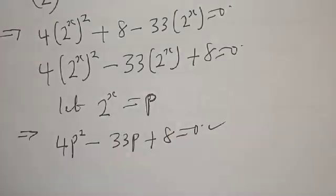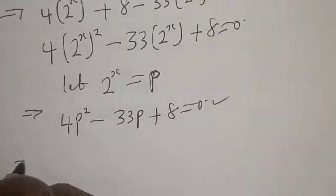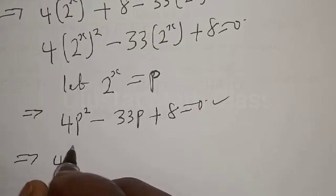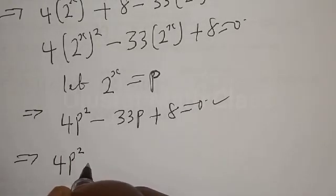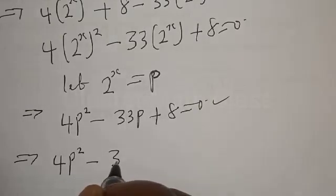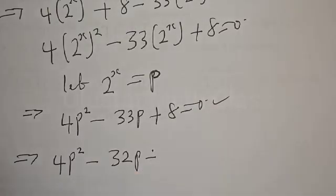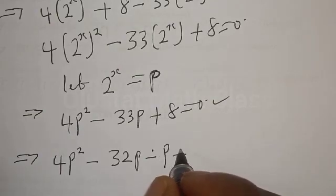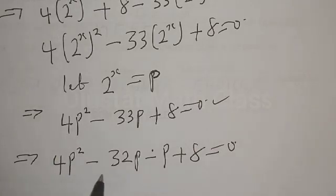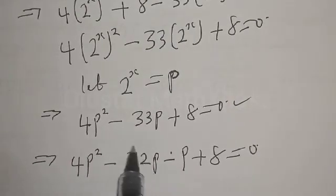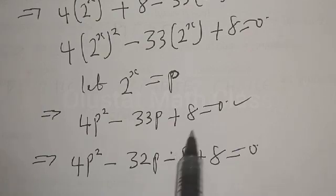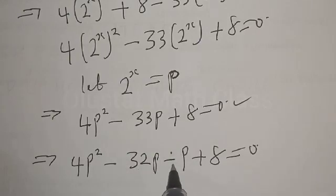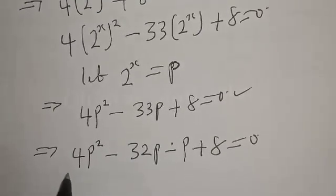This is a quadratic equation. Let's use the factorization method. This implies that we have 4p squared minus 32p minus p plus 8 equal to zero. Note that 4 times 8 is 32, so minus 32 times minus 1 gives plus 32, and minus 32 minus 1 gives minus 33. That is how we get those terms.